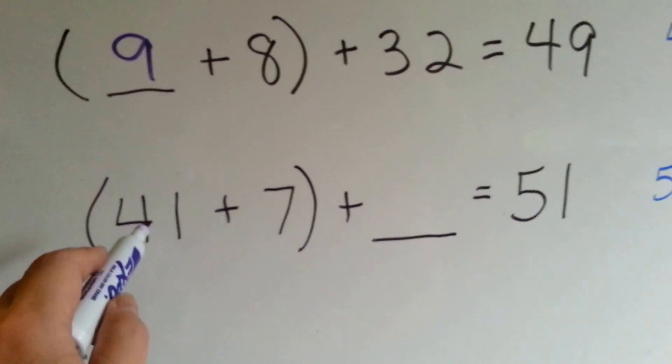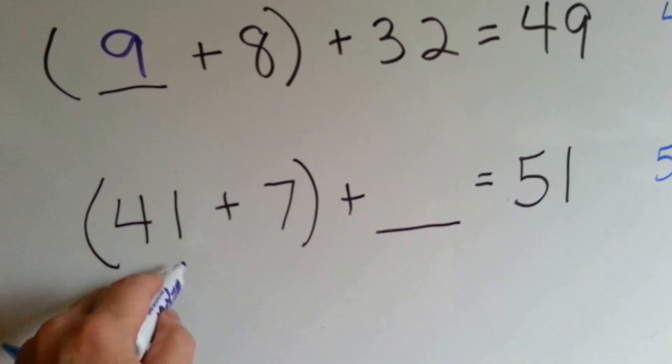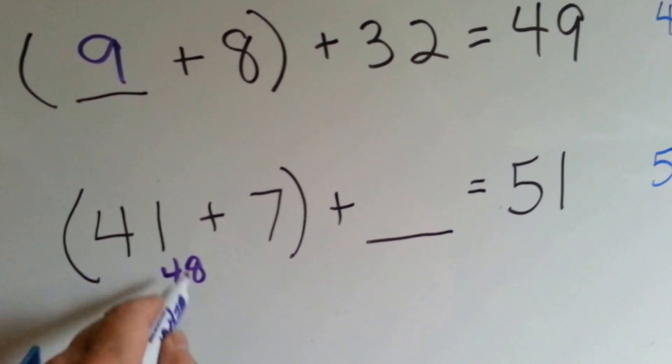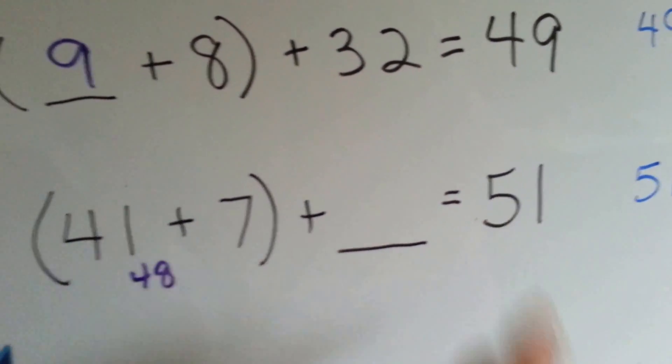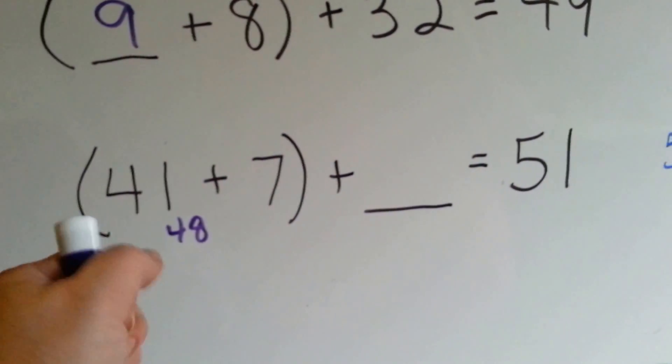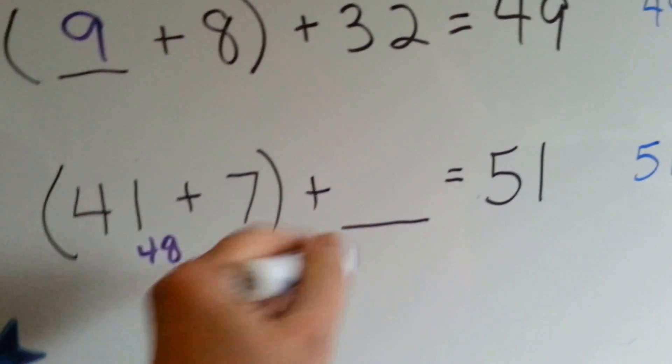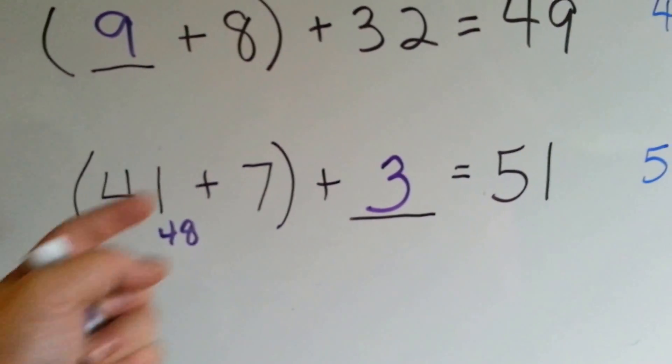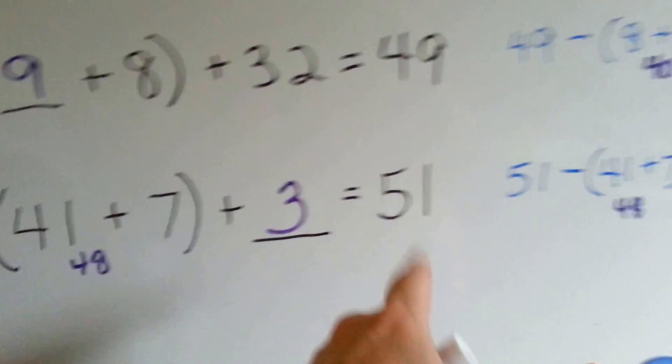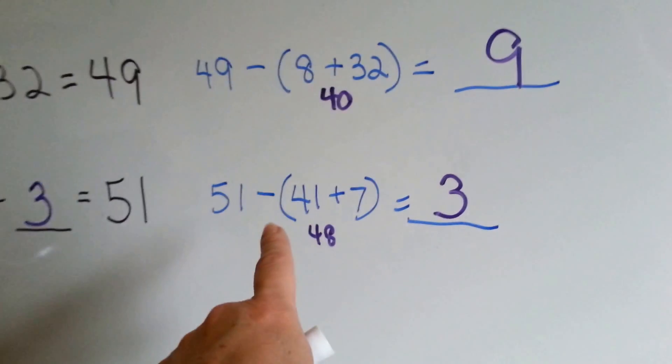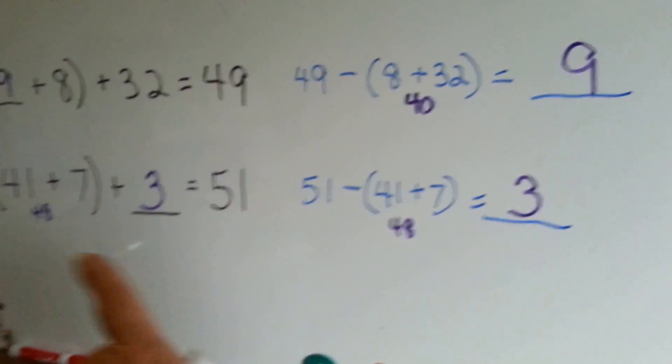Or we could have done this. 41 plus 7 is 48. 48 plus something is equal to 51. So we could have continued adding to get to this, or we could have used subtraction, the opposite, to help us solve it.